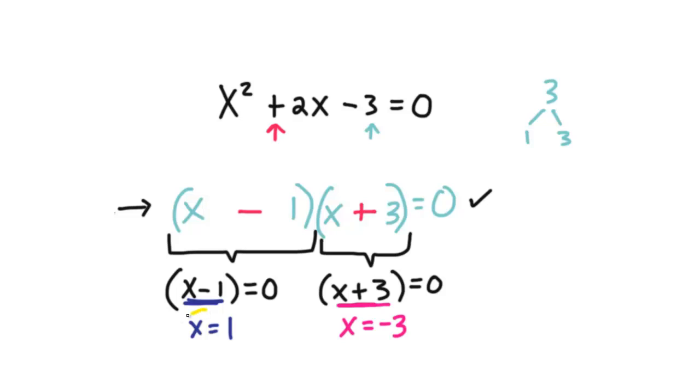So these x values represent the solutions to the original quadratic equation that we started off with, which means that if I were to plug in x is equal to 1 back into this equation, it's going to equal zero. Same thing with the negative 3. So therefore, these are known as the solutions or the roots of the original quadratic equation.